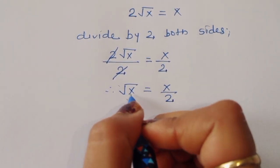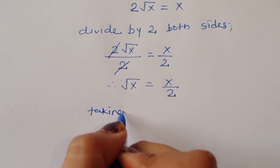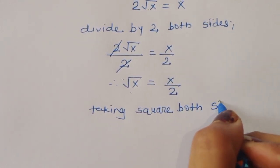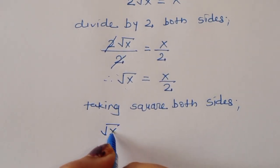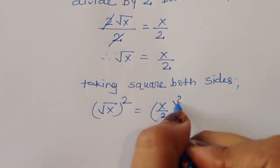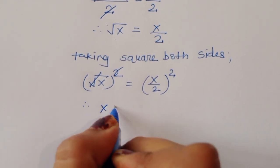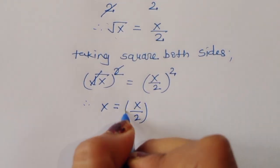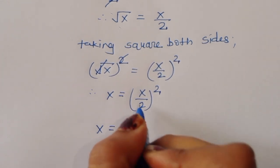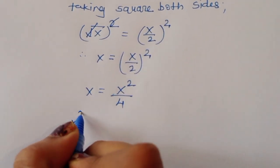Now we have to find out the value of x, so we take the square of both sides to remove the square root. Squaring both sides: the square root is cancelled, and therefore x is equal to x squared divided by 4.